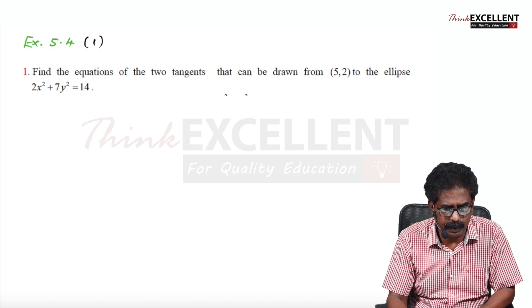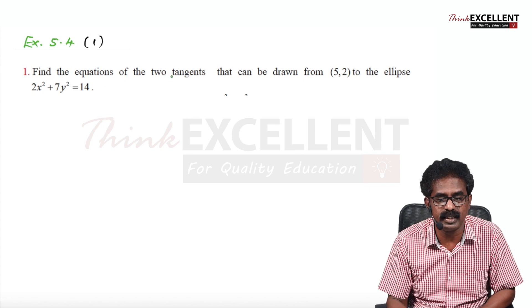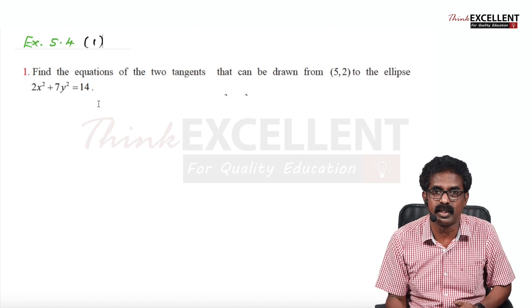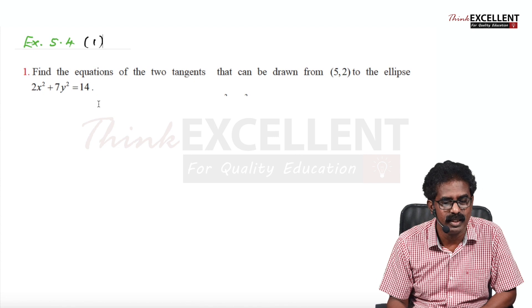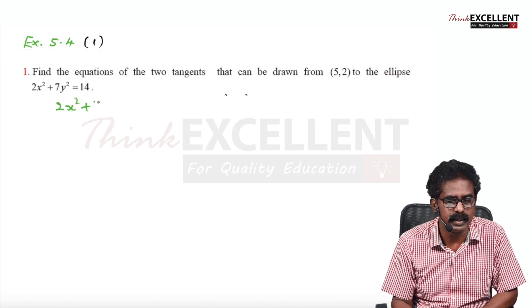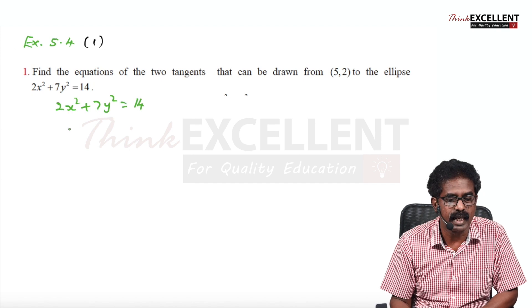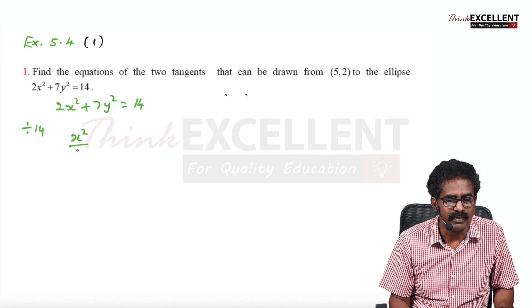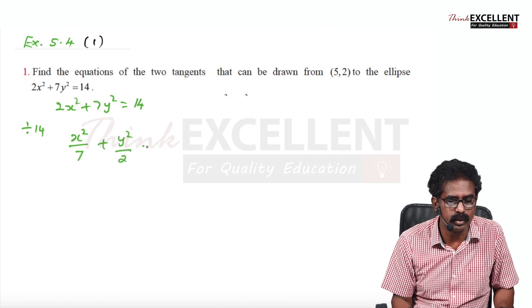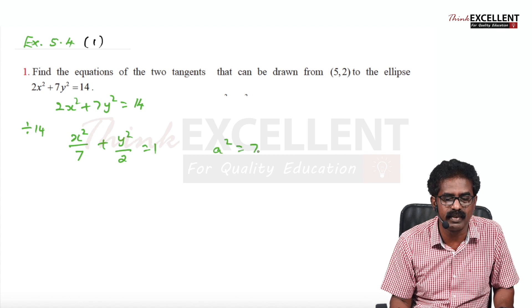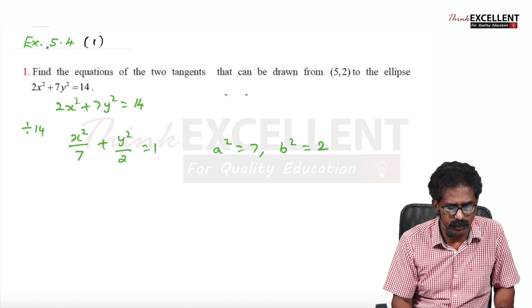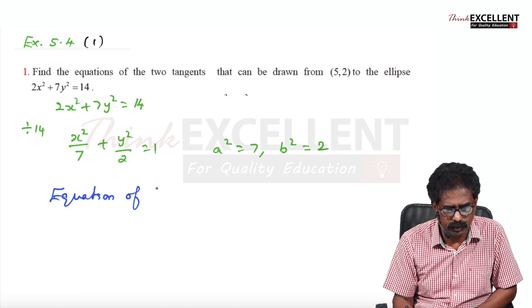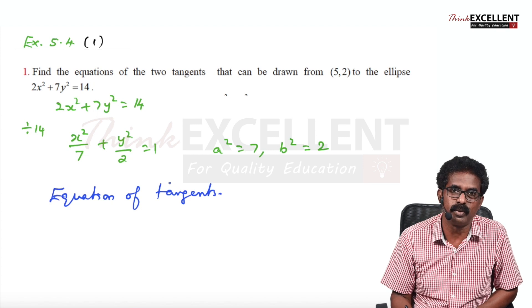Exercise 5.4, question 1: Find the equations of the two tangents that can be drawn from (5,2) to the ellipse 2X² + 7Y² = 14. Reduce to standard form by dividing by 14: X²/7 + Y²/2 = 1. So A² = 7 and B² = 2. We want the equation of tangents.